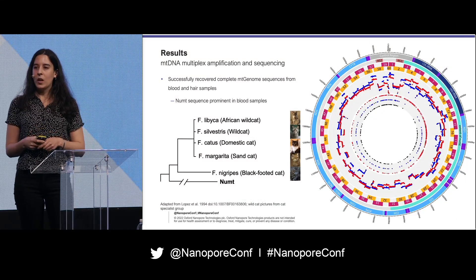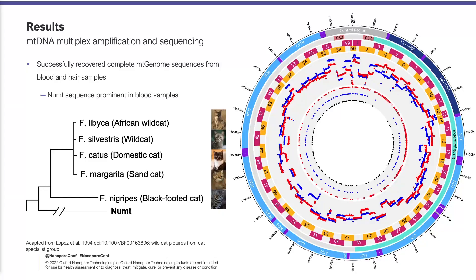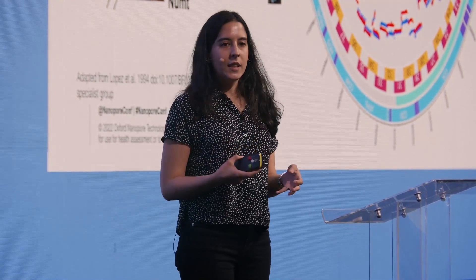We were able to successfully recover the complete mitogenome sequences from both the blood and hair samples. From the CIRCOS plot, going inwards, we have the labelled mitogenome, with RS2, RS3, and NUMT indicated; the 60 different amplicons; the read depth for the hair in blue and the blood in red. In the innermost tract, the variants called in the long-range PCR data in black match those called in hair shown in blue. In red we have the variants called in blood, where the NUMT is prominent — indicated by the open circles. The NUMT is an ancestral sequence of the mitogenome found in several cat species.